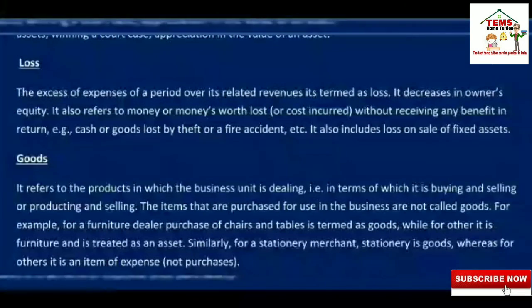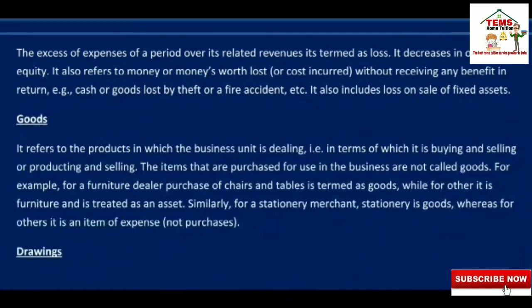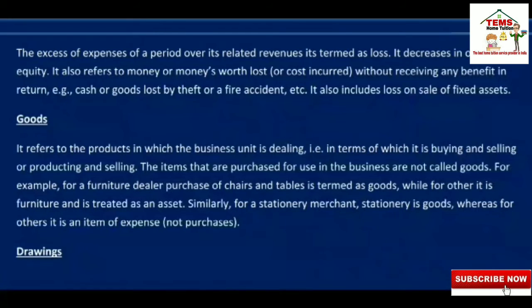Next term is Goods. Goods refer to the products in which a business unit is dealing — that is, items which it is buying and selling, or producing and selling. Items purchased for use in the business are not called goods. For example, for a furniture dealer, purchase of chairs and tables is treated as goods, while a computer purchased for office use is treated as an asset.